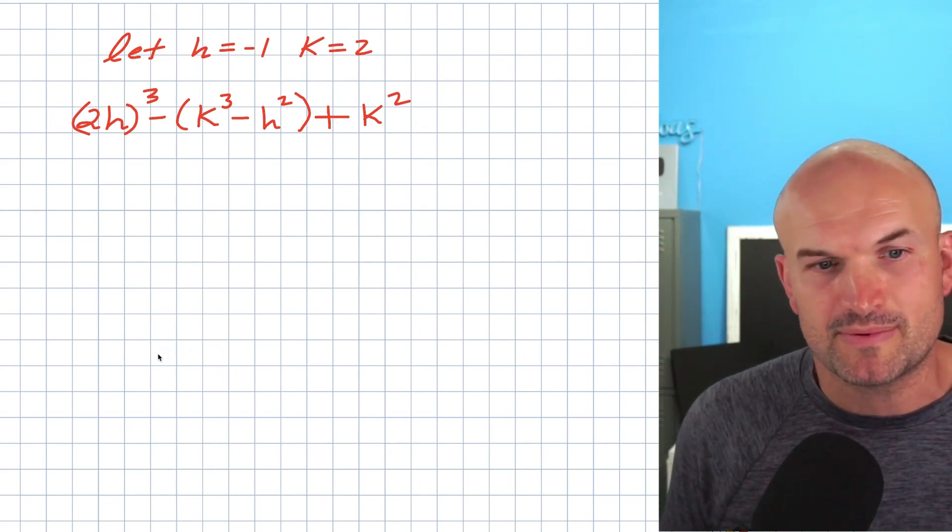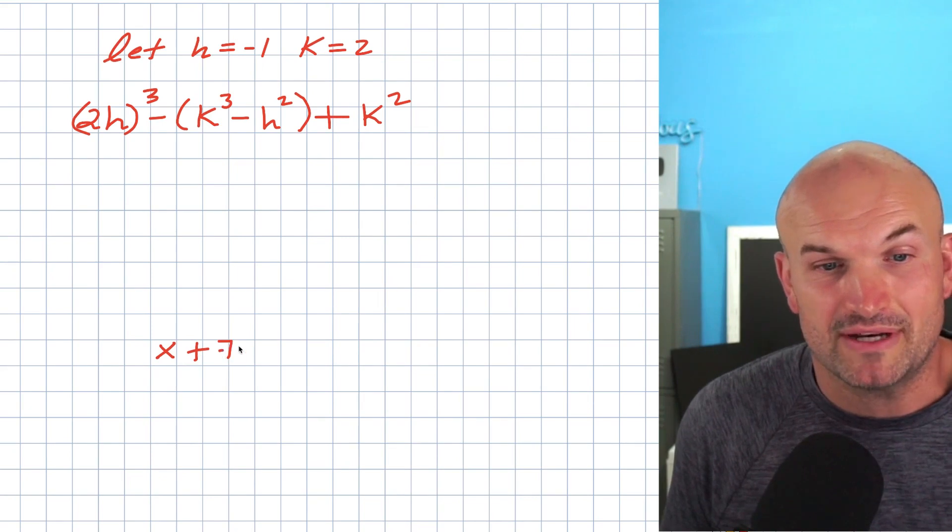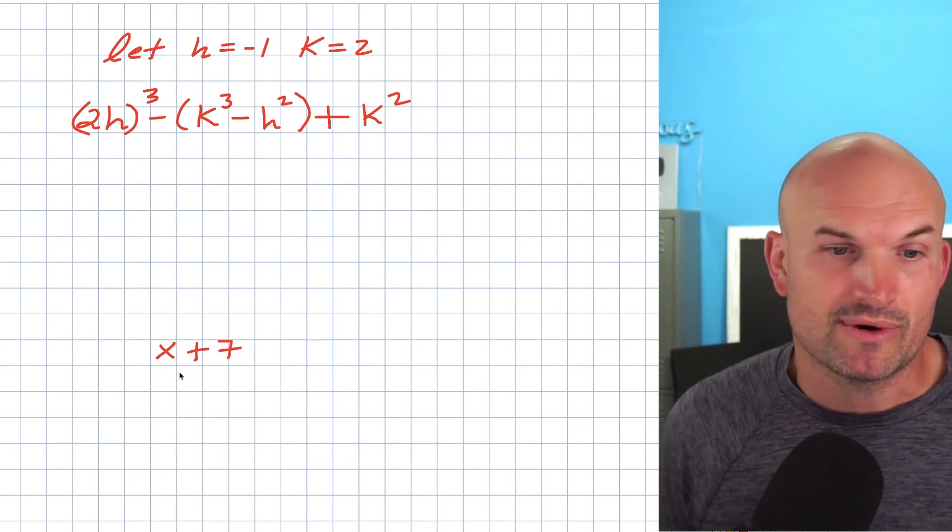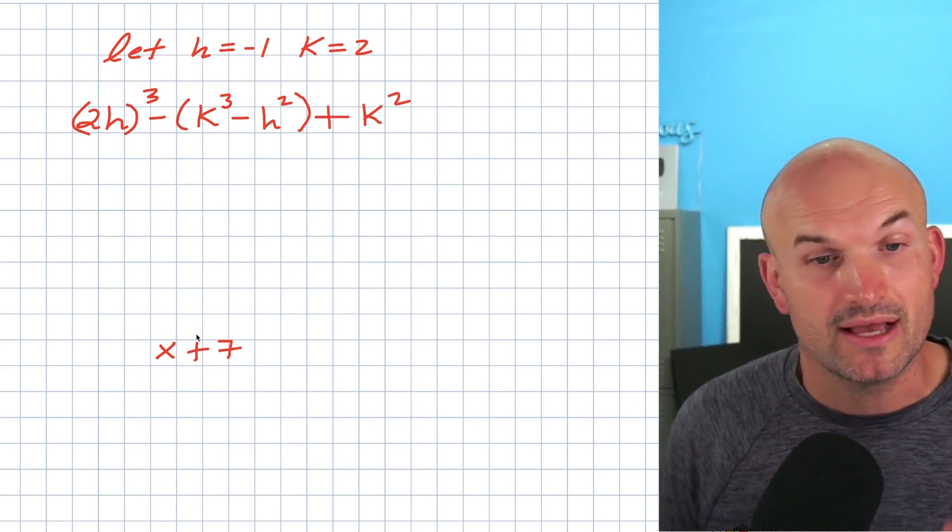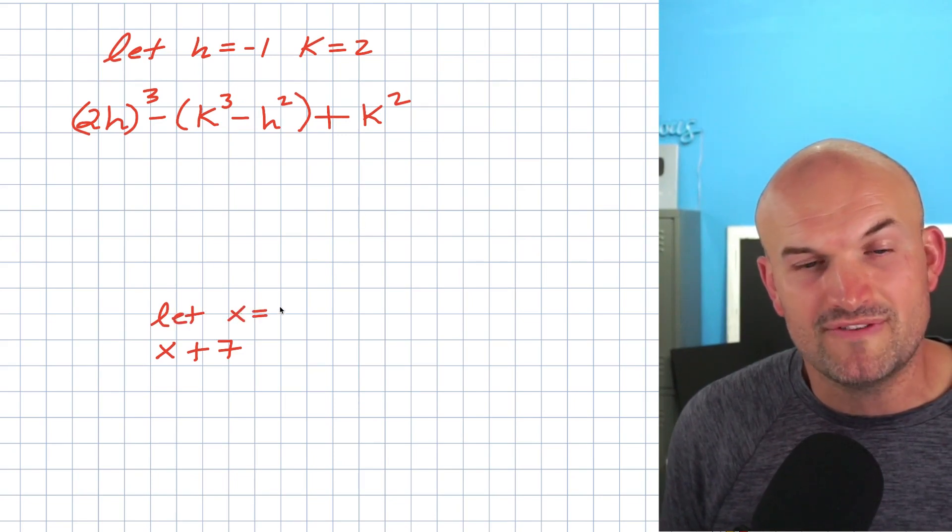Just remember, if I had an expression, we can do something basic like x plus seven. X plus seven, I can't do anything with, right? This is an unknown plus seven. However, once I say let X equal five, now we're saying X has a value. The value of X is equal to five.